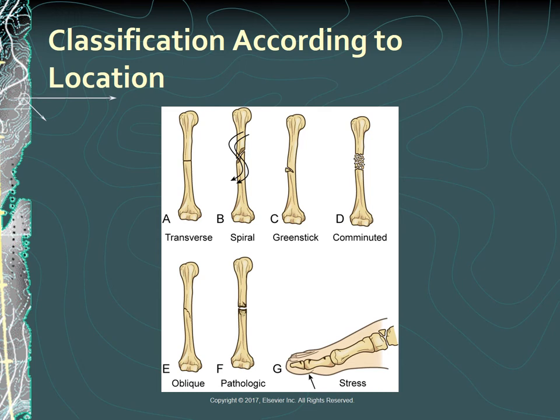Figure A is a transverse fracture, in which the line of the fracture extends across the bone shaft at a right angle to the longitudinal axis. B, a spiral fracture, is one in which the line of the fracture extends in a spiral direction along the shaft of the bone. C, a greenstick fracture, is an incomplete fracture with one side splintered and the other side bent. D, a comminuted fracture, has more than two fragments, with the smaller fragments appearing to be floating.